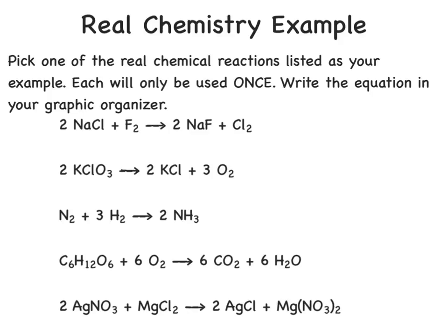Which of these equations shows a single replacement reaction? This is a single replacement reaction because we have one compound and one element on the reactant side, and one compound and one element on the product side. Notice the single element, fluorine, replaces the non-metal in the compound, chlorine. So we change from sodium chloride to sodium fluoride, and we change from fluorine being by itself to chlorine being by itself.